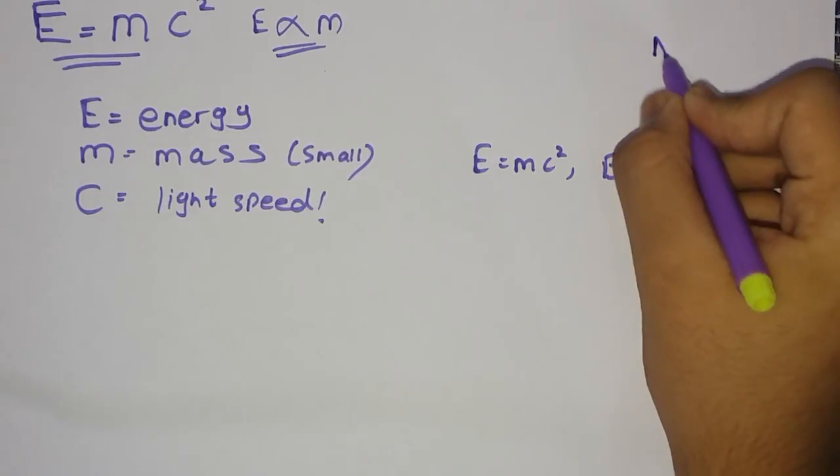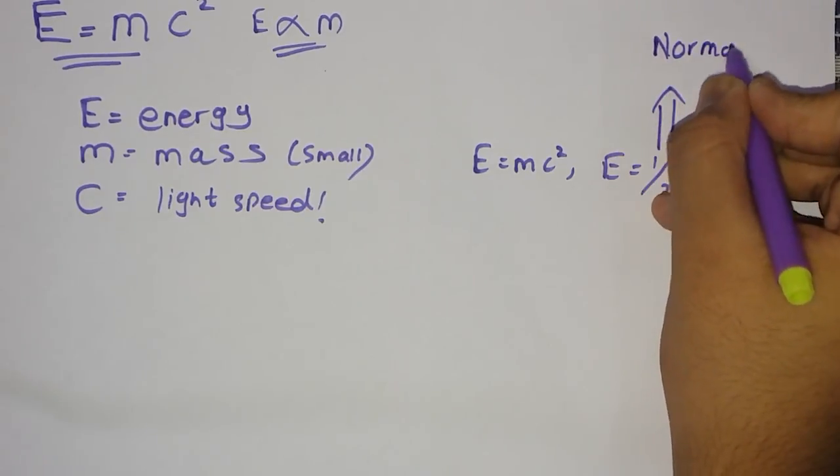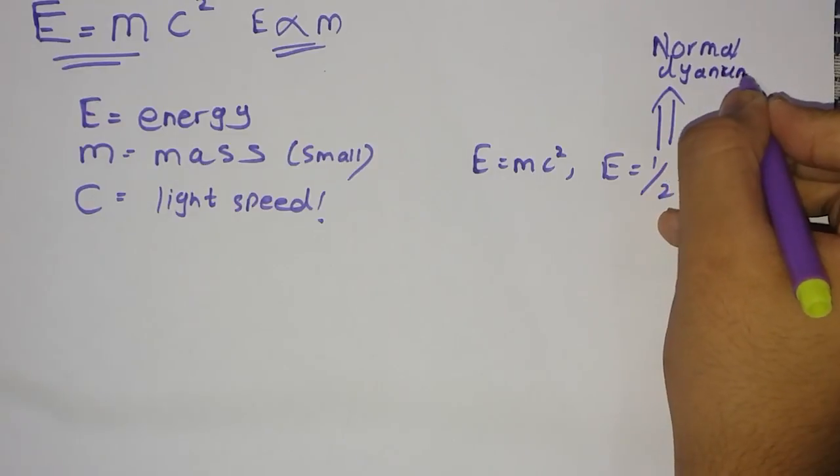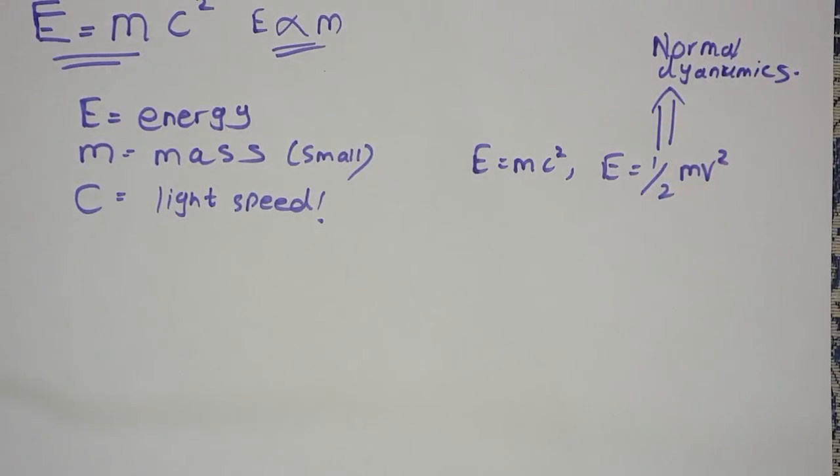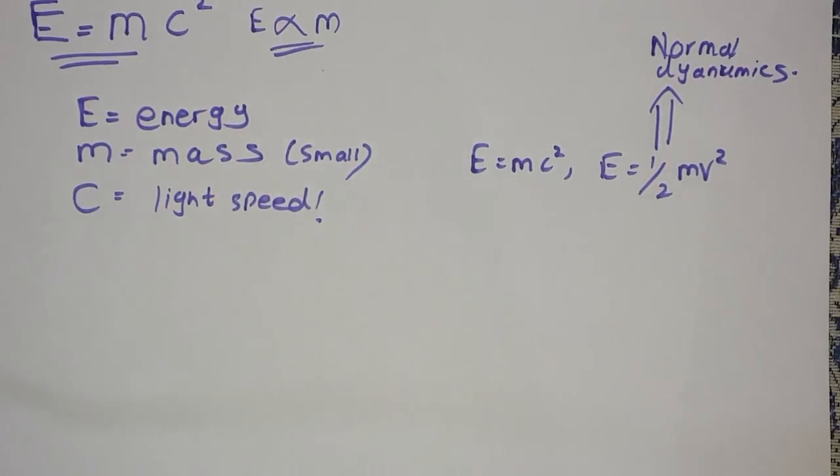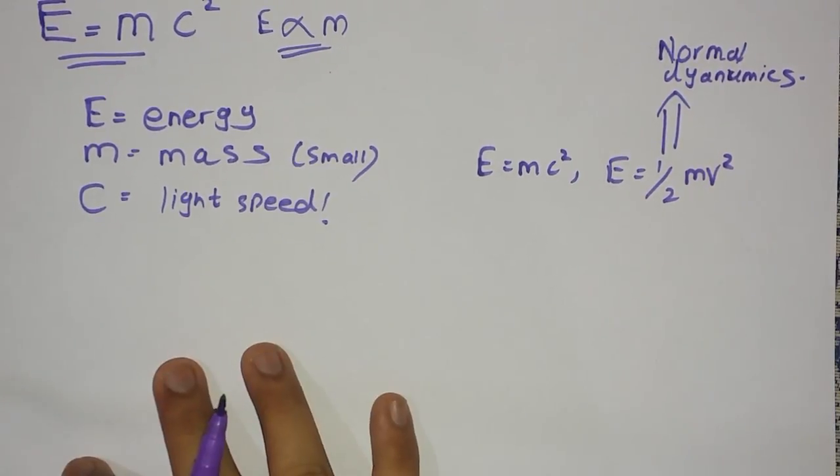This formula is used in any normal dynamics. For any normal dynamics, we can use the formula as E equals to half of M V squared, as we all know, as for any particle.